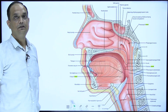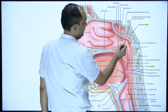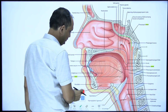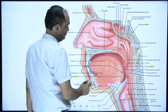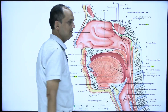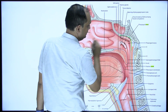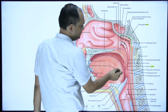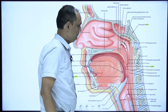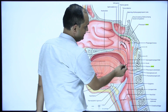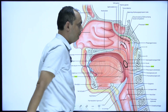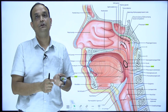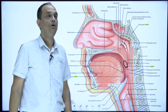In this diagram, you can see the components of Waldeyer's ring. At the junction of the roof and posterior wall, you can appreciate the nasopharyngeal tonsil. On both sides, the elevation known as torus tubarius is where you have the tubal tonsil. In the posterior part of the tongue you have the lingual tonsil, and on both sides of the oropharynx you have the almond-shaped palatine tonsil. When you draw a line connecting all of them, it forms a complete circle known as Waldeyer's ring.